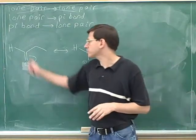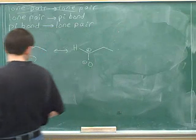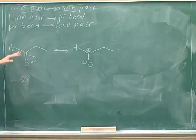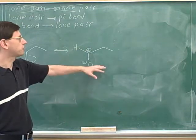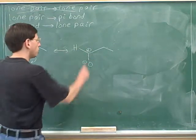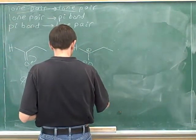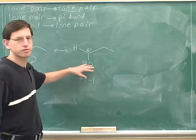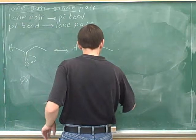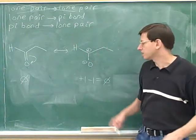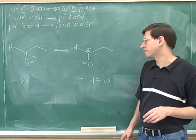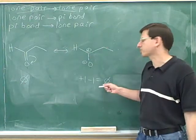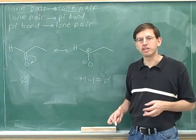What was the net charge in the left-hand case? The net charge was zero because there were no charges at all. What was the net charge in the right-hand resonance structure? We have a positive formal charge and a negative formal charge, so the net charge is zero. That confirms that we got the problem correct. The net charge you start with has to be the net charge you end with. If they're different, you know you've made a mistake.